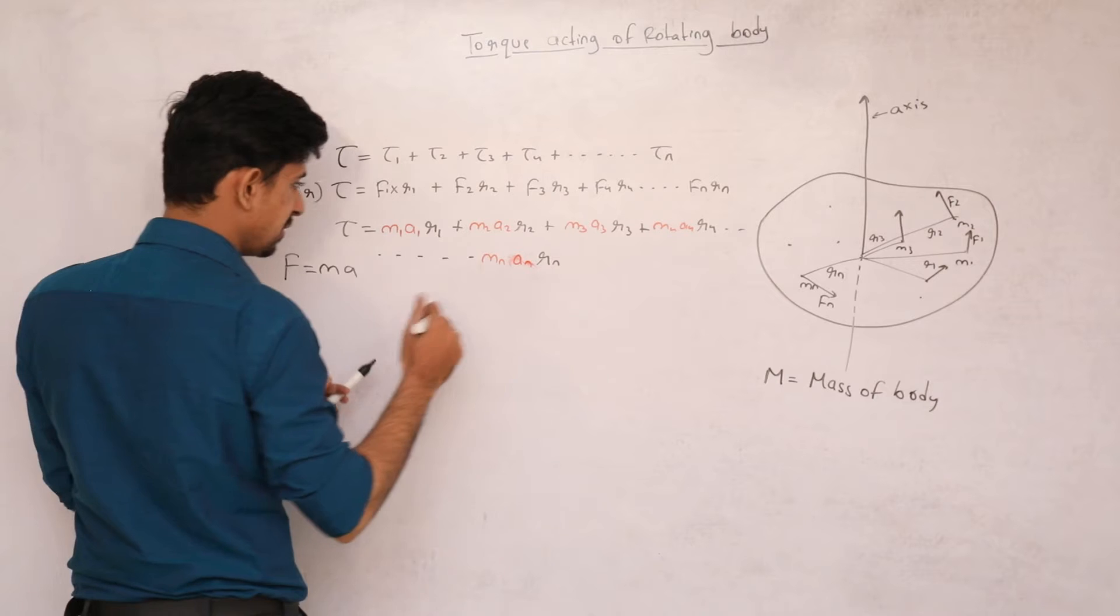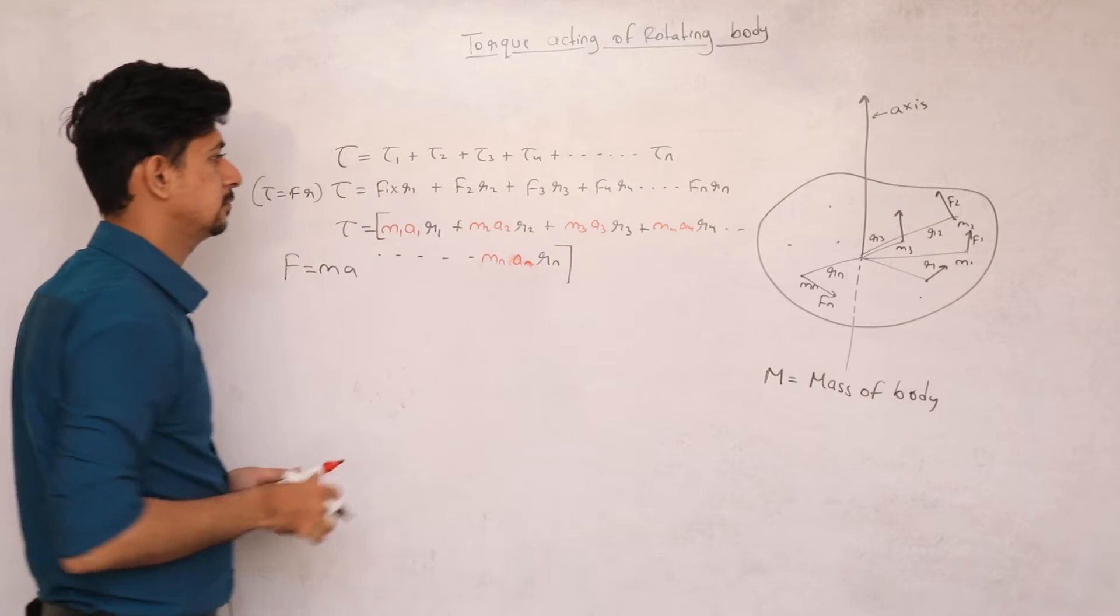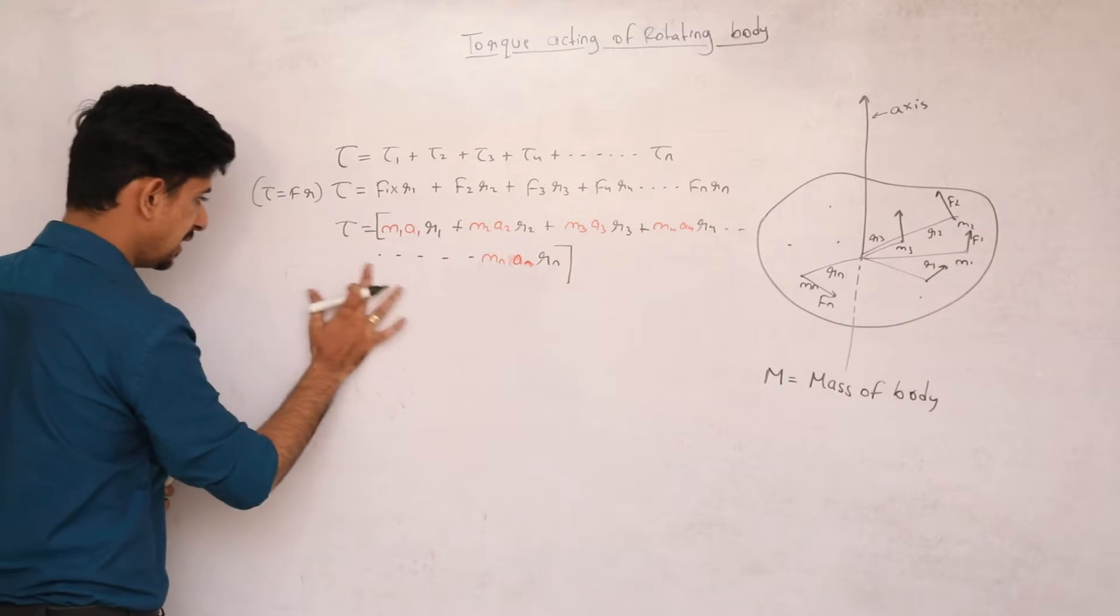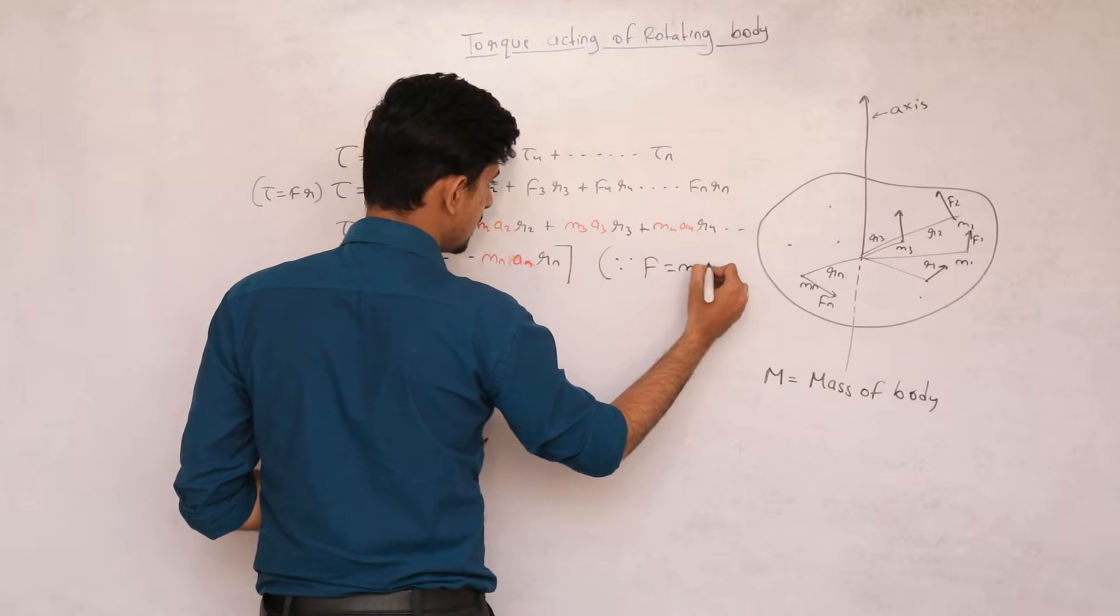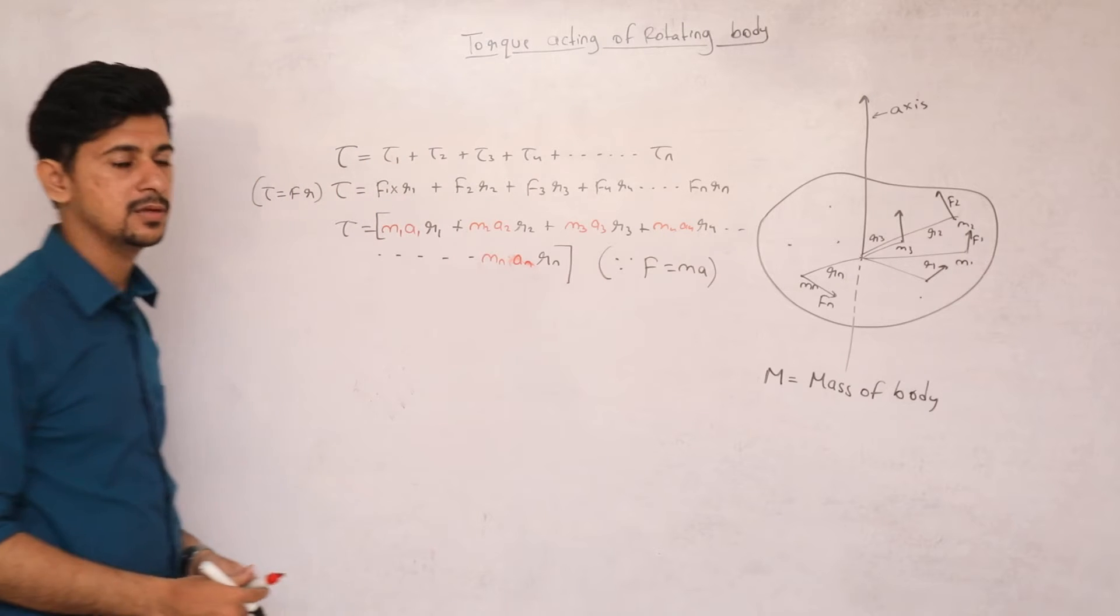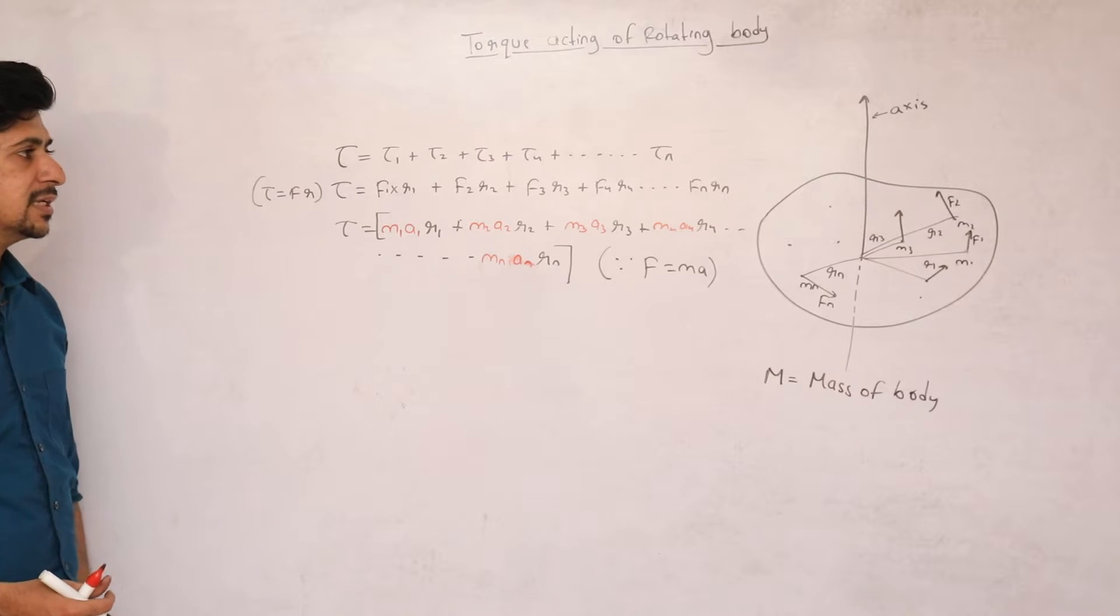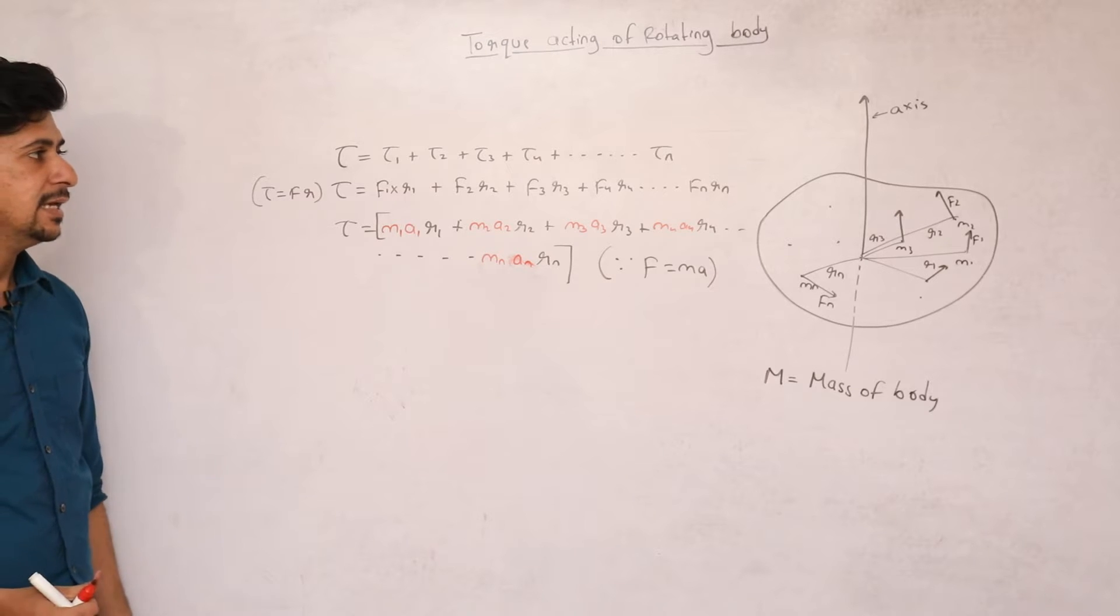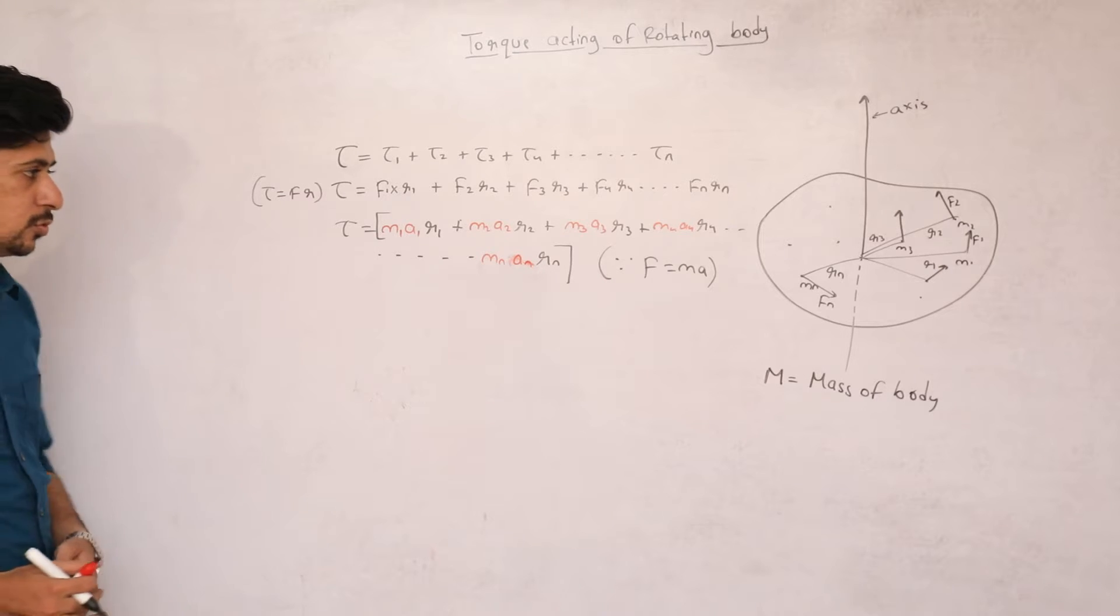When we do the summation, we get the total torque. Let me write this: since force is equal to mass into acceleration, now we're talking about which acceleration? The acceleration has two components - the body's velocity changes, and its direction changes.